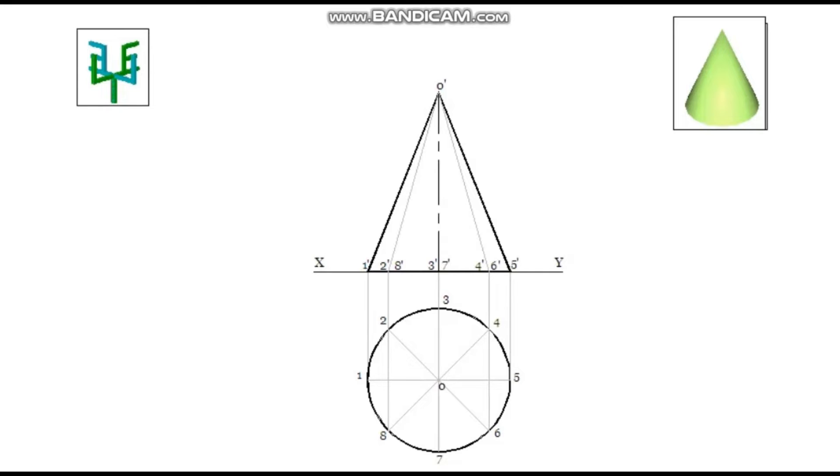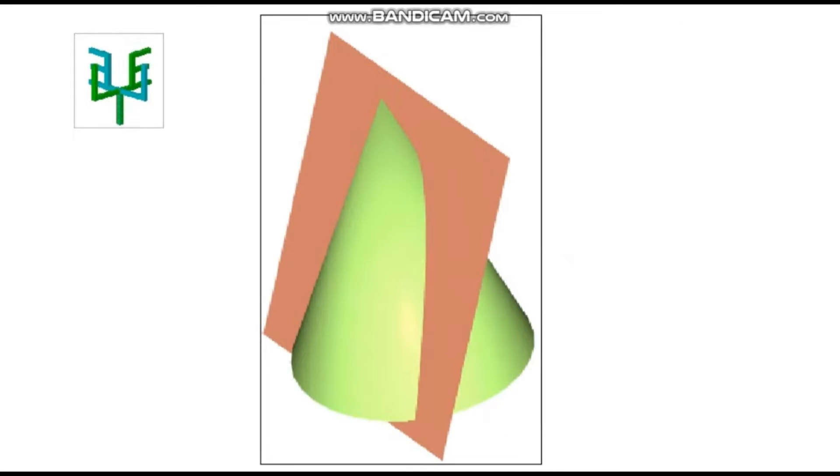While sectioning, the conditions of the sectional plane is to be considered. When the sectional plane is perpendicular to HP, sectioning of the solid must be done in the plan. When the sectional plane is perpendicular to VP, sectioning of the solid must be done in the elevation.